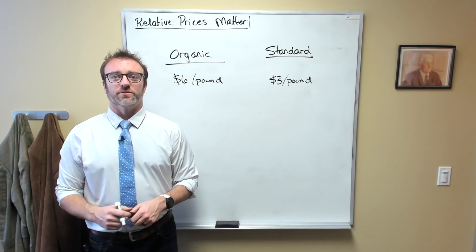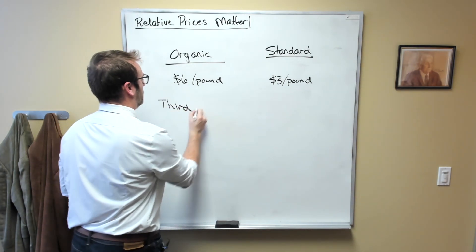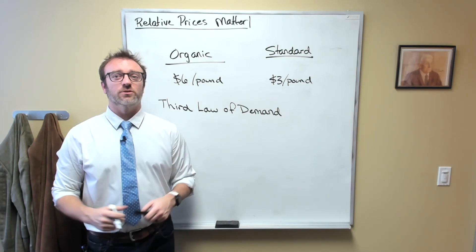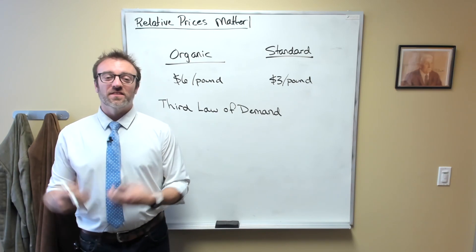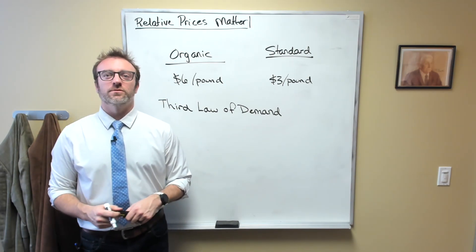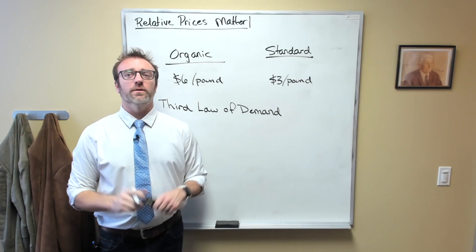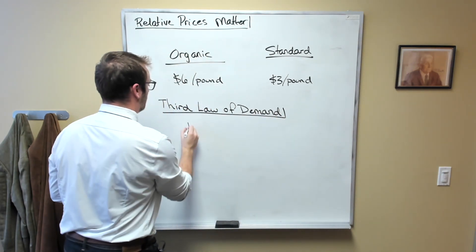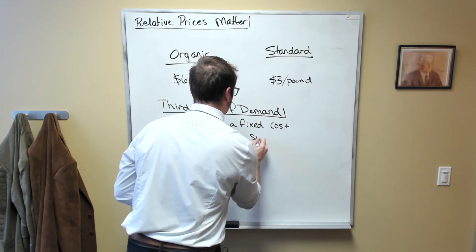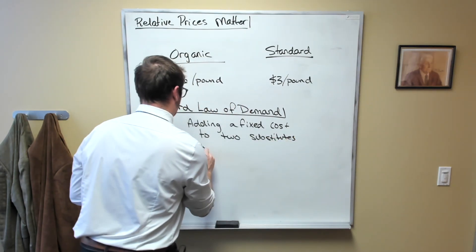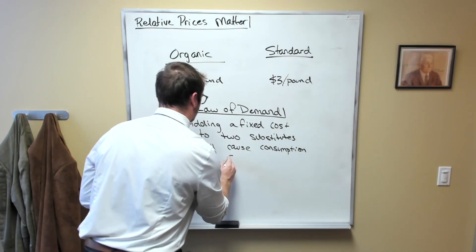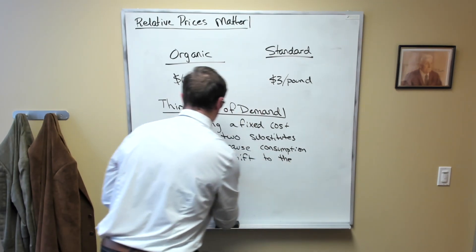Now it's time that we round out the laws of demand with what we call the third law of demand. Sometimes this is referred to as the Alchian-Allen effect, named after Armen Alchian and Bill Allen, the authors of your textbook. What they state is that adding a fixed or constant cost to two substitute goods will cause consumption to shift toward the more expensive good.